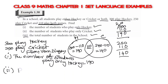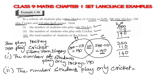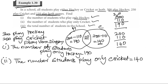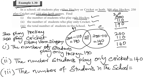The number of students who play only cricket equals 140. The total number of students in the school: 190 in the only-hockey region, 110 in the intersection, and 140 in the only-cricket region. We will add the number of students: 190 plus 110 plus 140.